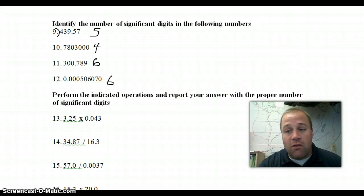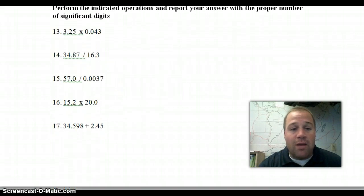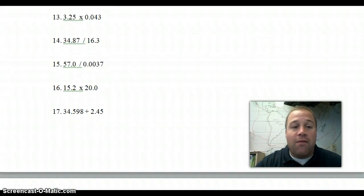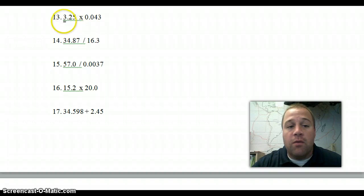For the math section, we're actually changing the directions that I have on here, and we're going to do it the exact way we've done in class. Identify the number of significant digits in each part of the problem. Circle the number that is fewer. So, for number 13, 3.25 has a decimal point present, so we start on the left. 1, 2, 3 significant digits. Decimal point present, start on the left. First thing other than zero is 4, so 1, 2 significant digits. That's the lower number. That's how many our answer can have.